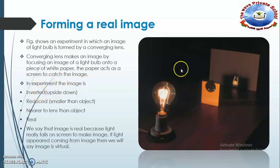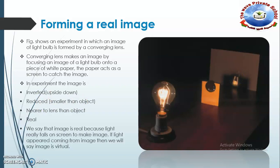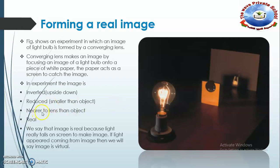In this experiment the image is inverted — upside down — and reduced, meaning smaller than the object. The image is also nearer to the lens than the object. The image is real because light really falls on the screen to make the image. If light only appeared to come from a point, then we would say the image is virtual.